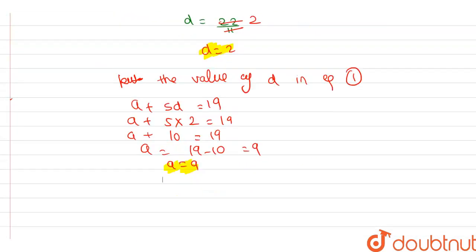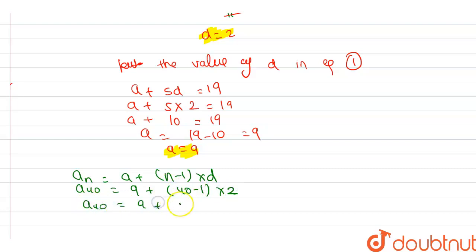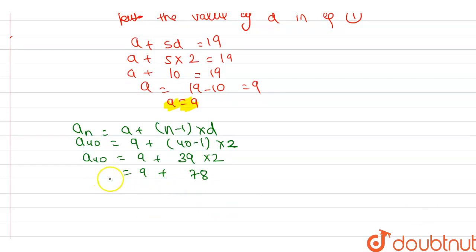Now we find the 40th term using the nth term formula: a₄₀ = a + (n − 1)d = 9 + (40 − 1) × 2 = 9 + 39 × 2 = 9 + 78 = 87. So the 40th term of the AP is 87.